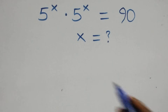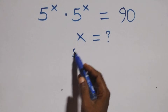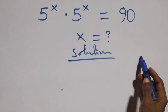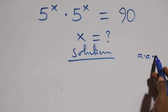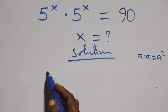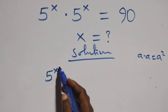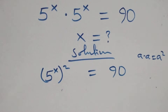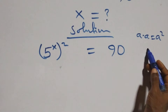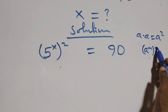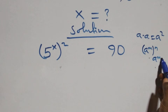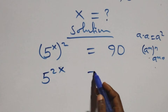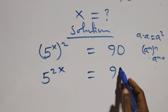Hello, you're welcome. How to solve this nice exponential equation. From what we have here, we have a times a squared — same thing as a raised to power x, all squared — equals 90 on this side. We have 5 raised to power 2x equals 90.